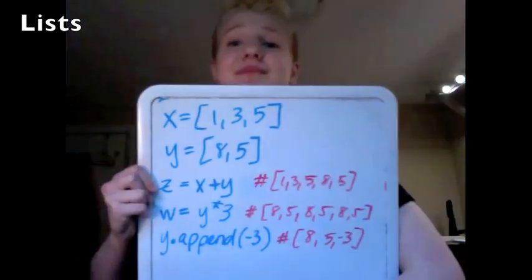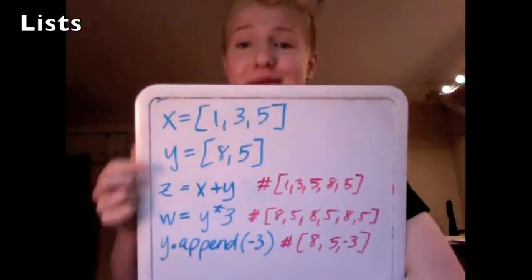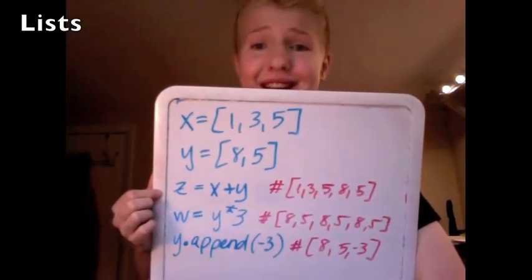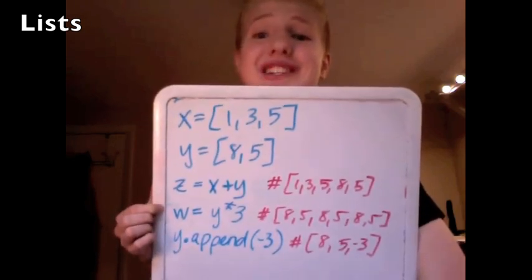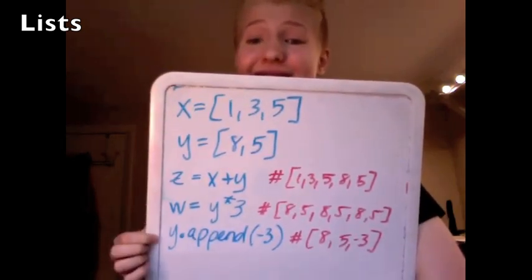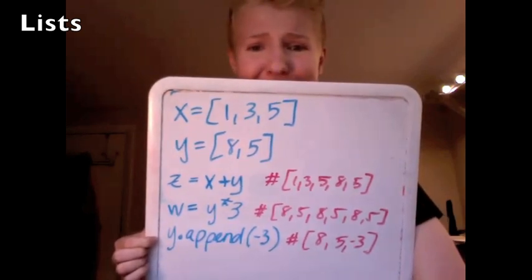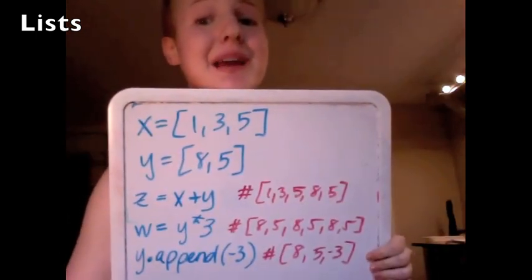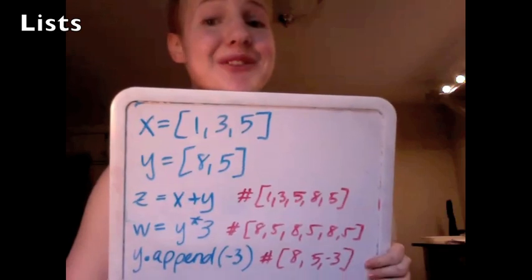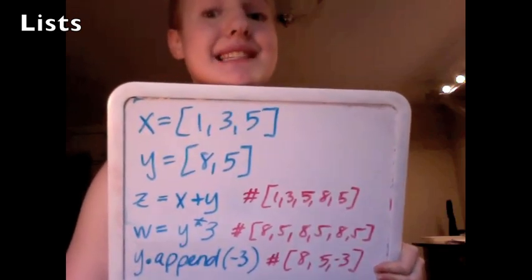Lists in Python semantically correspond to something between an array and an ArrayList in Java. Literals and some basic operations can be done much more neatly in Python. We've got x as a list, y as a list. We can concatenate the two just using a plus sign, and even do repeated concatenation using a multiplier. We can append something to the end — the list size can be whatever it wants to be. In Java terms, this mutates y from [8, 5] to [8, 5, -3], just like the ArrayList add method.